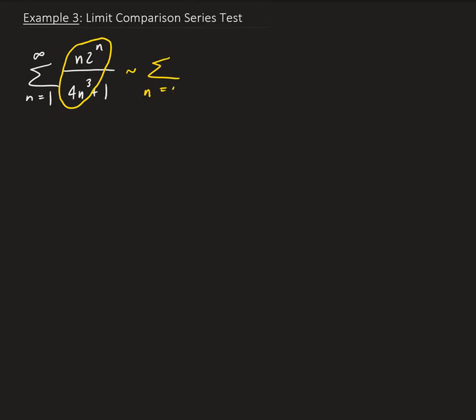We're going to have summation of n times 2 to the n all over 4n cubed. All right, so we can further break this down.